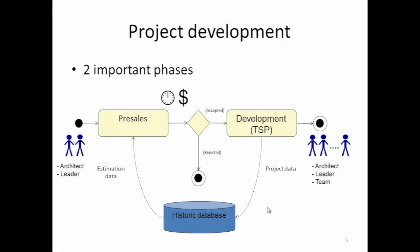Let's understand a little better what this pre-sales phase is. This company develops custom-based solutions for customers and is constantly trying to sell projects. Projects are divided across two important phases: the pre-sales and the operation, which is carried out in TSP. During the pre-sales, there's a pre-sales team composed of a leader and an architect. What they do is take a request for proposal or interview customers and produce a technical and costing proposal. The cost and time is fixed for the project. Either the proposal is not accepted by the customer, or it is accepted and the project starts development using the Team Software Process.